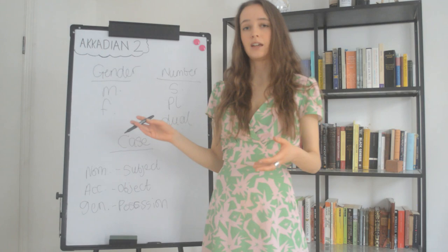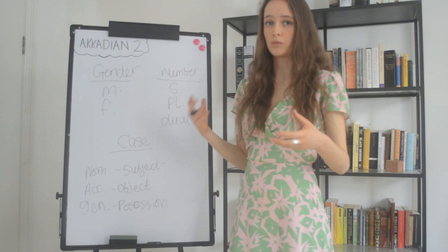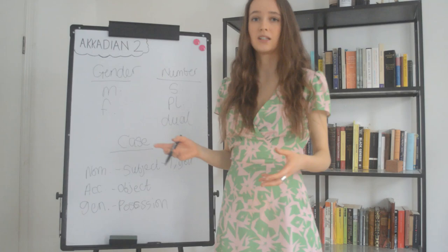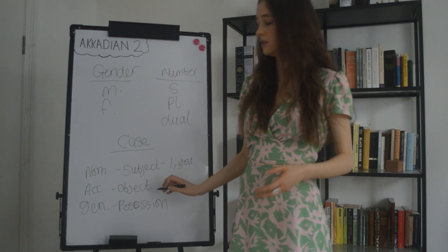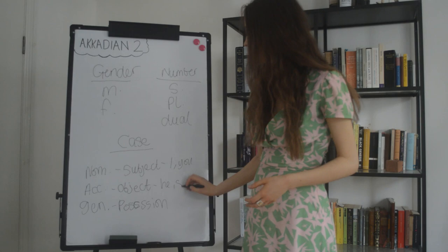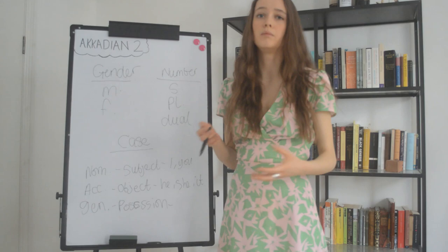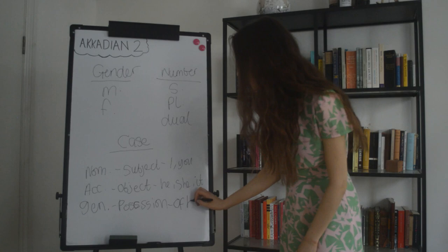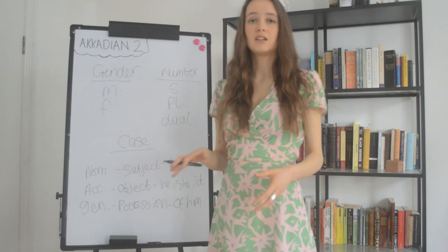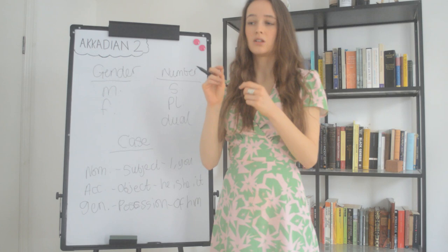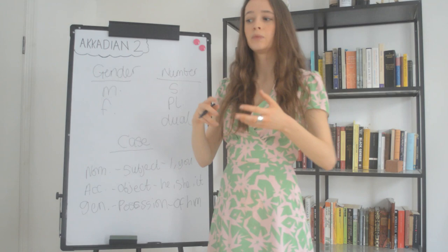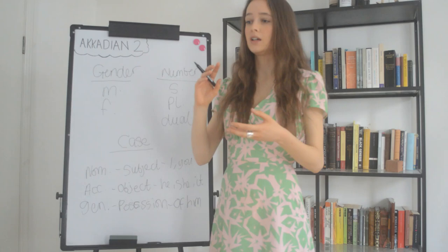Another way to explain the case system is by using pronouns. Words like I, you, he, she, it functioning as subjects will be in the nominative. Pronouns like him, her, them as objects will be in the accusative. Phrases like 'of him' or 'belonging to her' reflect the genitive, marking possession. Also important: the genitive state is triggered in nouns which follow a preposition — those little words which denote direction or relationship between nouns, like 'towards,' 'inside,' 'away from,' etc. Prepositions trigger the genitive in the following noun.